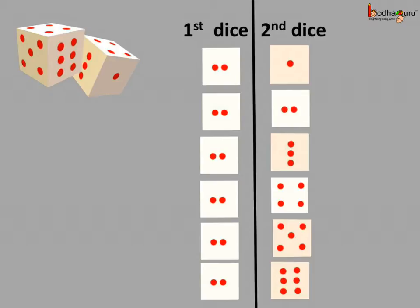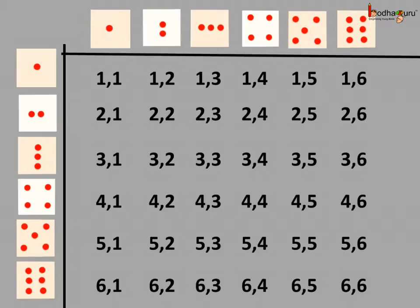So, 2 numbers on first dice and for each number on the first dice, we may get 6 different combinations on the second dice. 6 times 6, that is equal to 36 total events. You know, a list of all possible outcomes is called the sample space. So, this is the sample space of two dice thrown simultaneously and it has 36 outcomes.